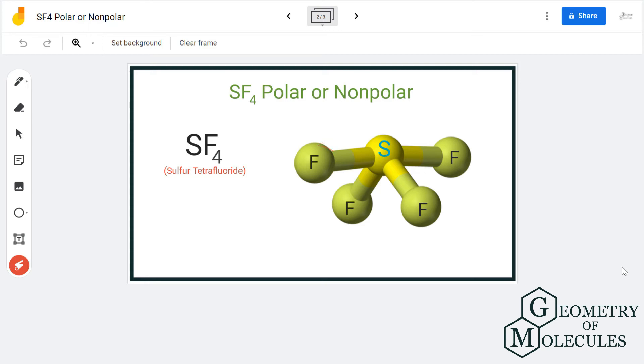But when it comes to these two atoms, they cannot cancel out each other's dipole moments because they are pointing downwards. So they cannot cancel out the dipole moments, which means there is a dipole moment in this molecule, and which results in formation of poles in this molecule.